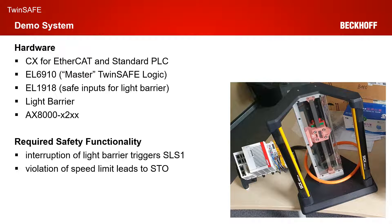From the safety functionality point of view, we want to realize a very simple safety loop. We have a light barrier, and the interruption of the light barrier should trigger safe limited speed on the AX8000. The AX8000 will limit the speed safely, and a violation of the speed limit should lead to STO on the AX8000.